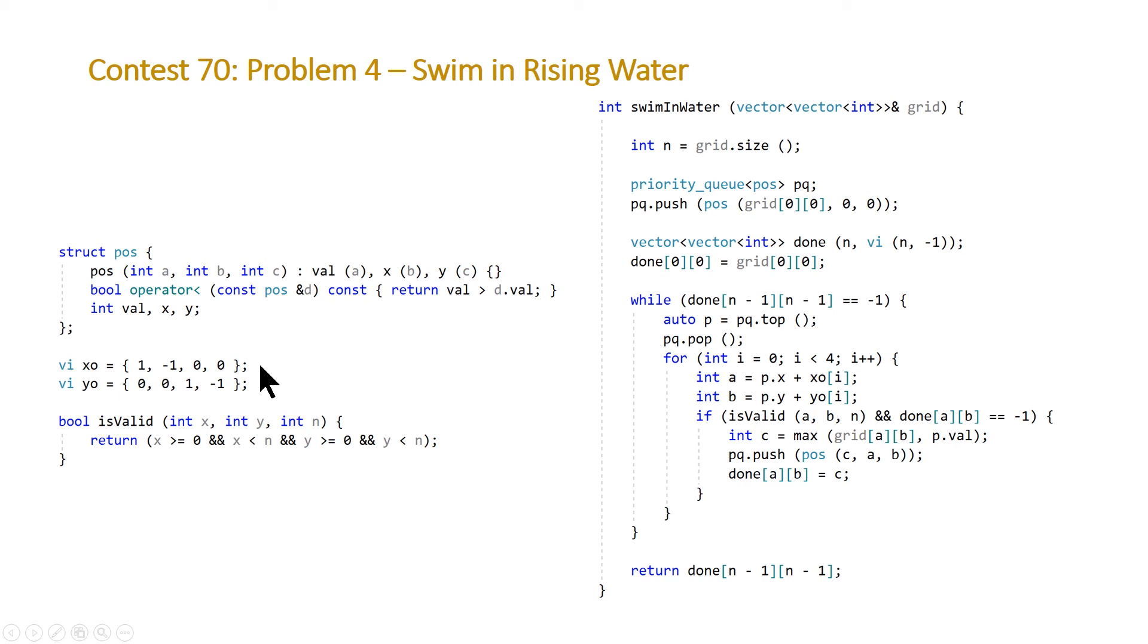These two structures, if you've seen my videos before, are just for offsets. It makes it easier when you are trying to add the adjacent elements to your priority queue. And this is a simple function to make sure that we're never going out of bounds when we are checking our adjacent elements.